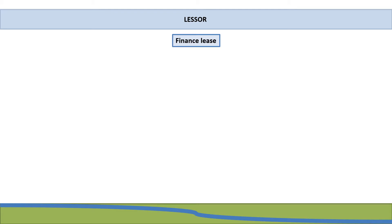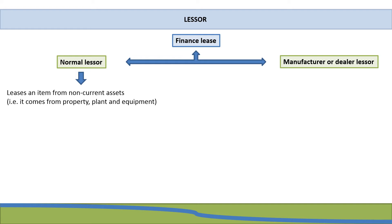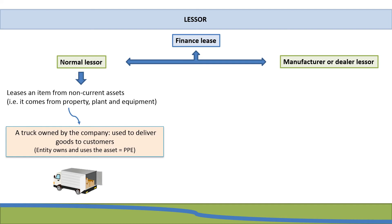Let's take a closer look at a finance lease. When dealing with a finance lease, you have two different types of lessors that could apply. You could have a normal lessor, or you could have a lessor who is a manufacturer or dealer of goods. A normal lessor is one who leases an item from their non-current assets — for example, from PPE. An example would be a truck owned by a company, used to deliver goods to customers. In other words, the entity owns and uses this asset.